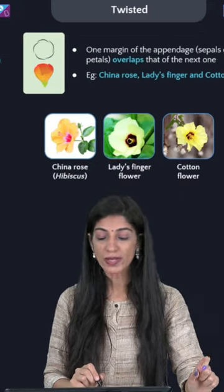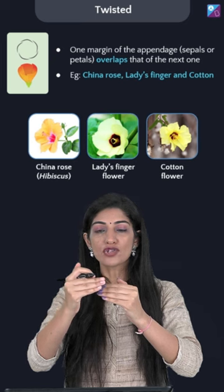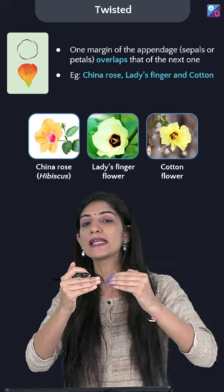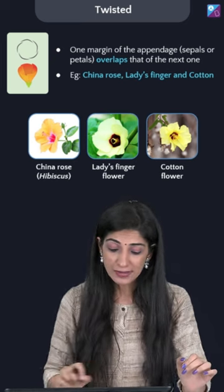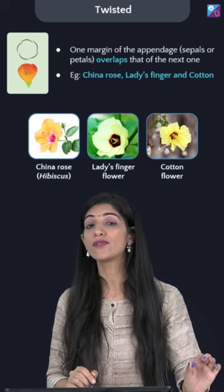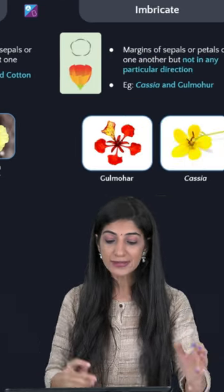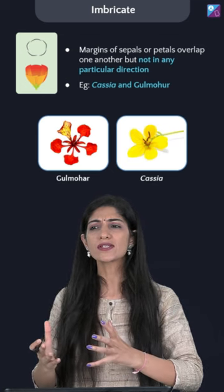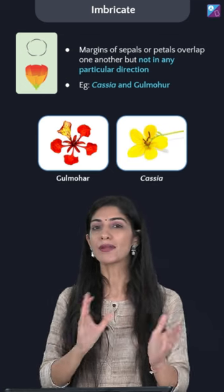The next one is twisted estivation, where one margin overlaps the margin of the next petal or sepal. Classic examples are china rose, lady's finger, and cotton. The third is imbricate estivation, which is just like twisted but the overlapping is